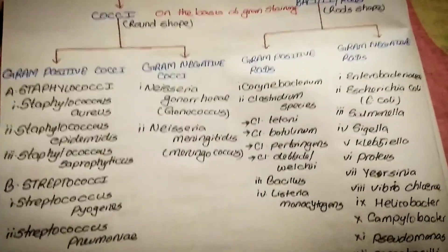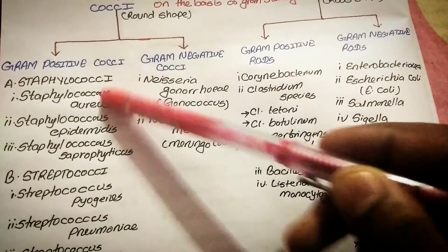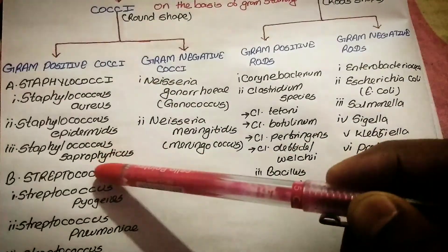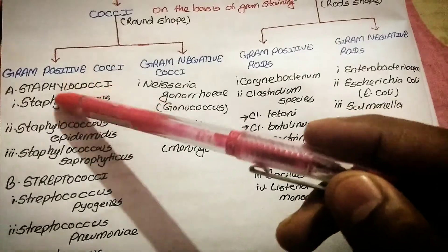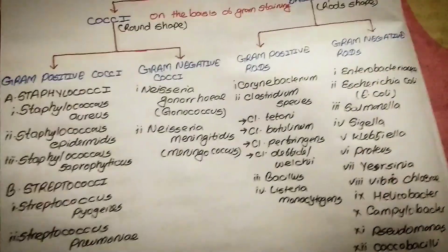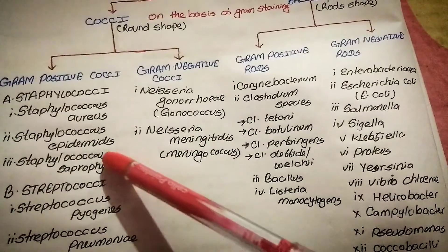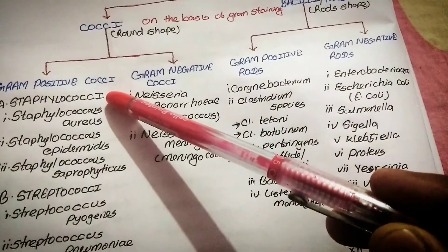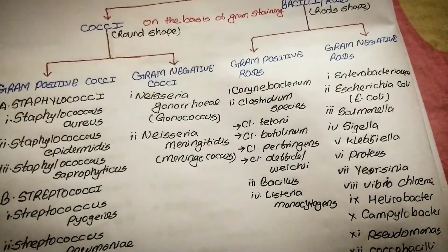Let's discuss gram-positive cocci. Inside gram-positive cocci there are Staphylococci and Streptococci. Gram-positive cocci is further divided into two types: one is Staphylococci and another is Streptococci. Inside Staphylococci there are three subtypes: Staphylococcus aureus, Staphylococcus epidermidis, and Staphylococcus saprophyticus.